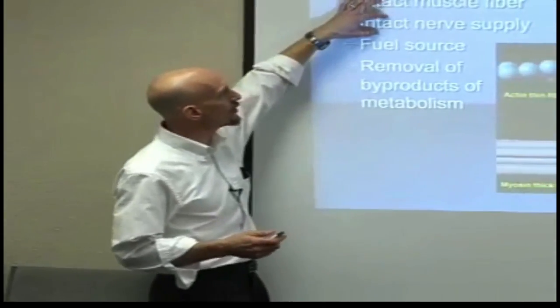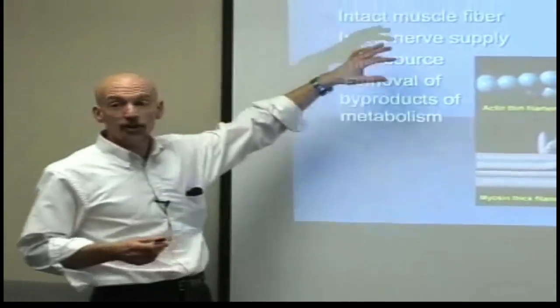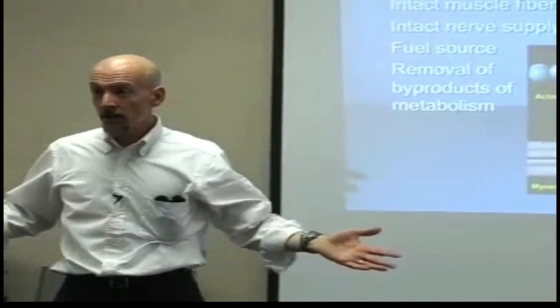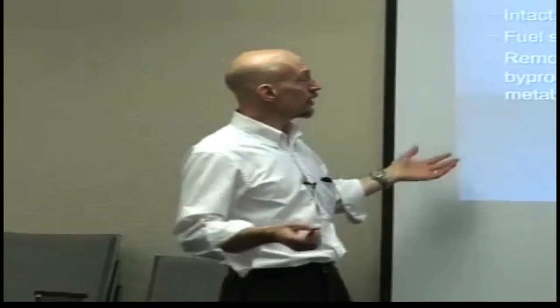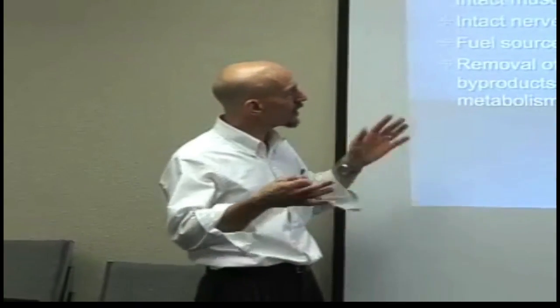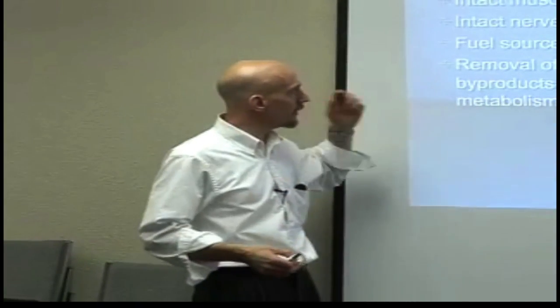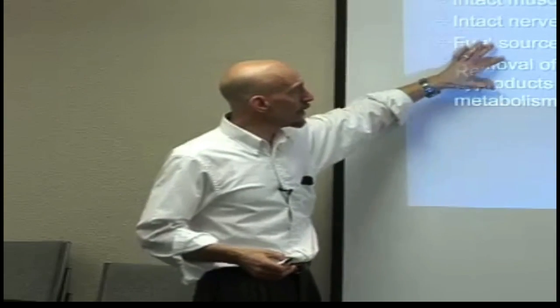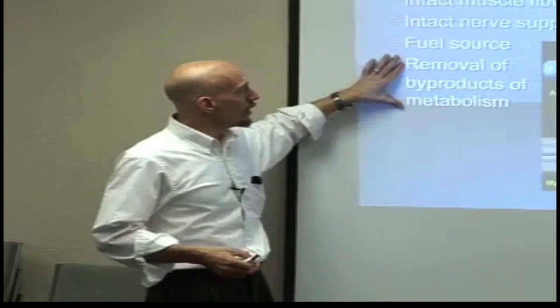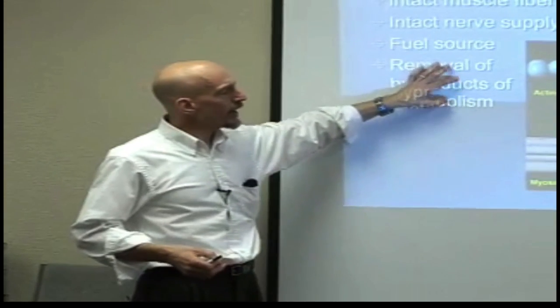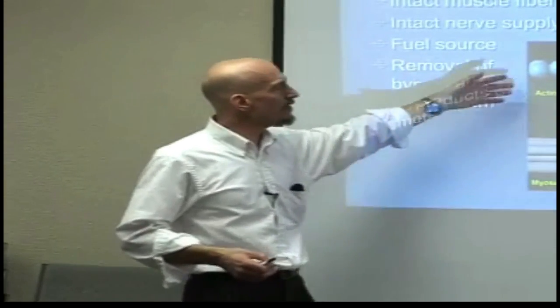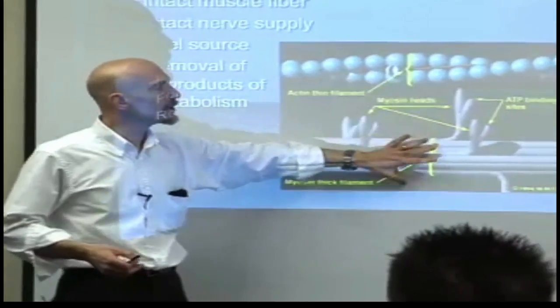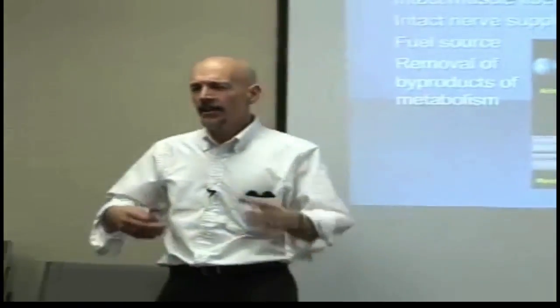Going back — for a muscle to contract, you need an intact muscle fiber, intact nerve supply, and a fuel source. We need glucose to run the muscle, or creatine phosphate — though creatine phosphate only lasts about 90 seconds. We also need to remove the byproducts of metabolism. We have F-actin and G-actin that interact with myosin.